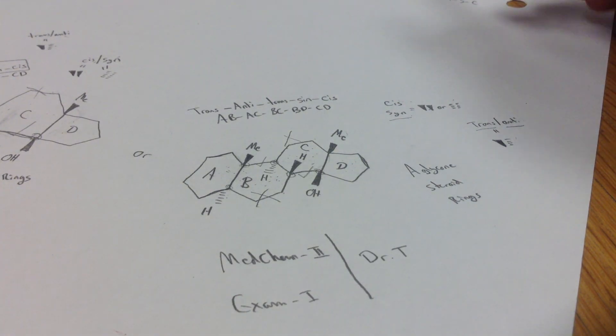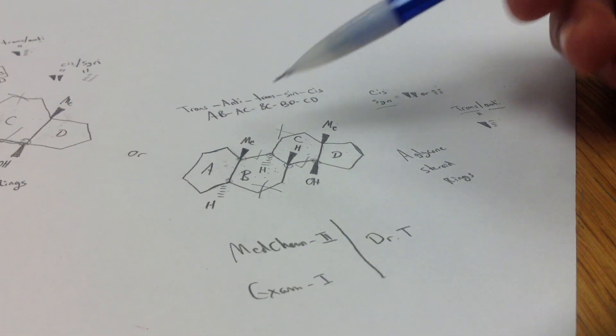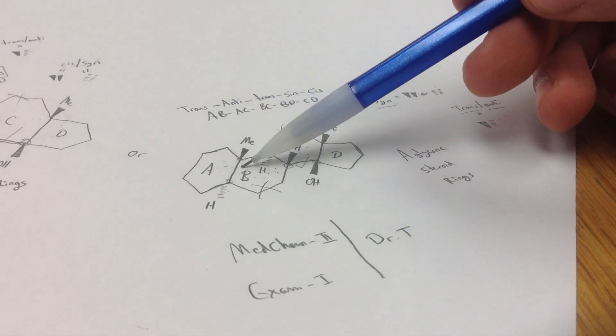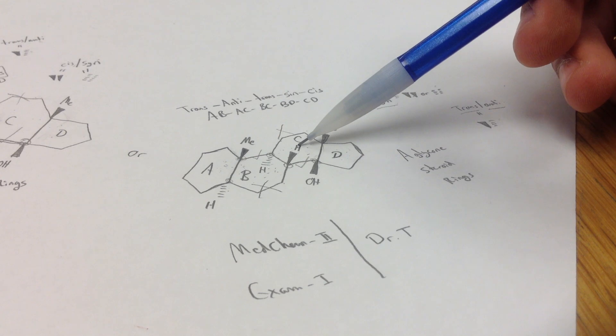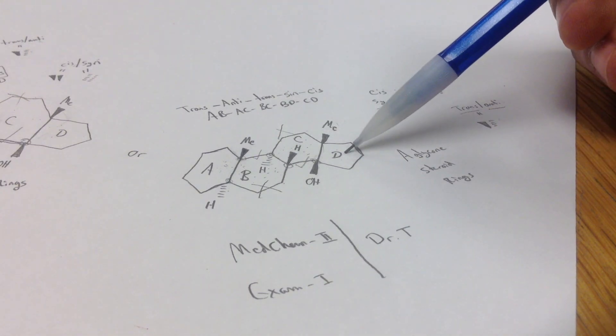So basically, to sum things up, you just go through, follow the A, B, A, C, B, C, B, D sequence.